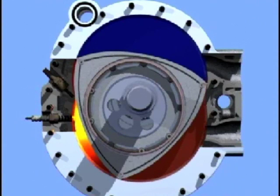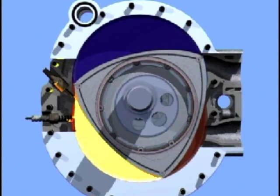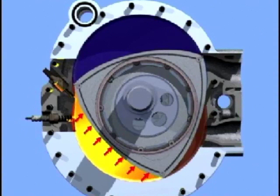To help under starting conditions, when the motor is cold, a spark plug can aid the ignition process. Then comes the third stroke, the expansion stroke. Here, the ignited mixture exerts pressure on all sides of the combustion chamber. The side created by the rotor is hereby forced to move, to allow the mixture to expand.